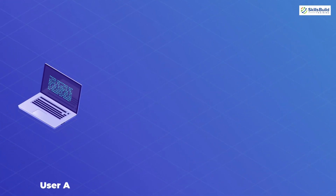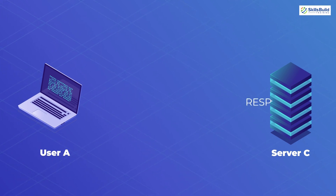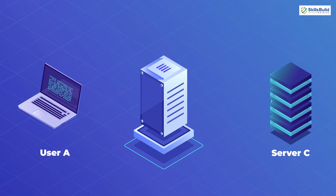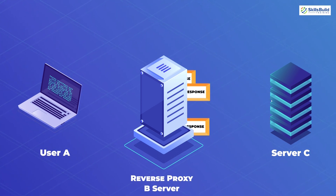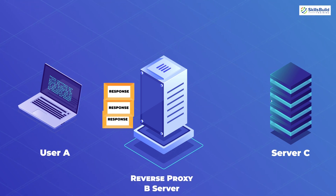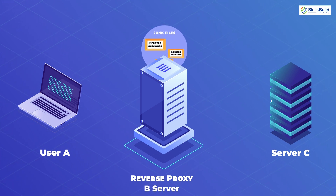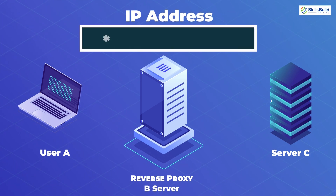To illustrate with a simple example: your device is System A, sending requests to Server C. With a reverse proxy — let's call it Server B — all your requests go to Server B first, which then forwards them to Server C. When Server C responds, the reverse proxy sends you only the relevant data, removes harmful or irrelevant data, and does not reveal the IP address of Server C to you.